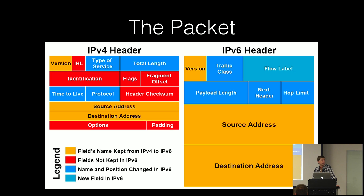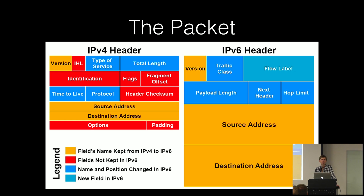IPv6 has a simplified header with extensions appended before the data. It's a much more extensible protocol, and assuming we don't exceed the ridiculously large number of available addresses, this will probably be the last internet protocol you ever need — because you can keep extending it without breaking backwards compatibility.